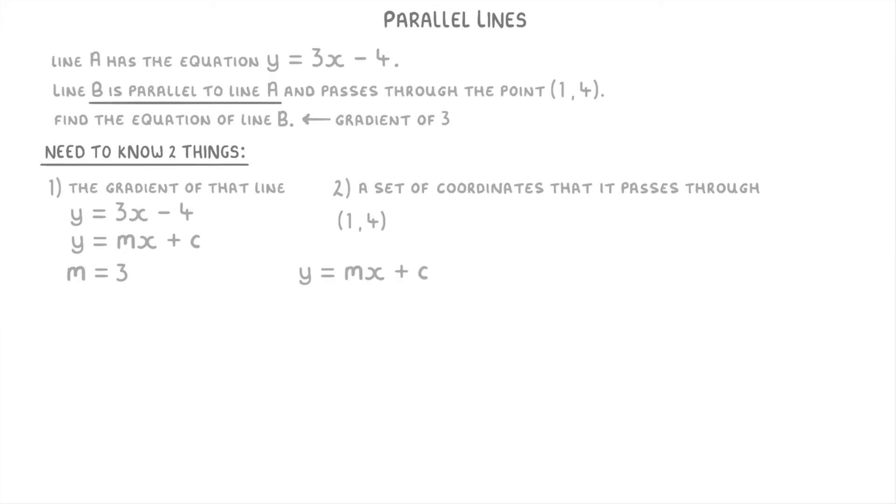So here, that would give us 4 equals 3 times 1 plus c, which simplifies to 4 equals 3 plus c, or 1 equals c.